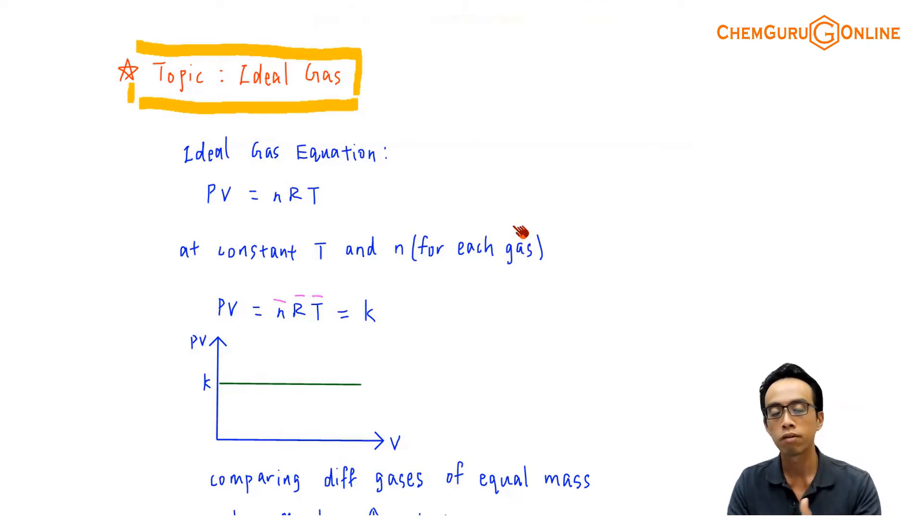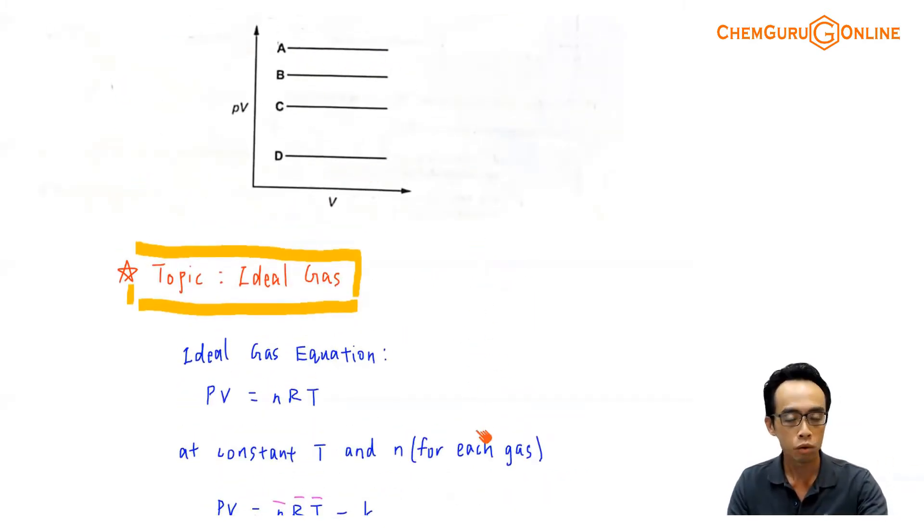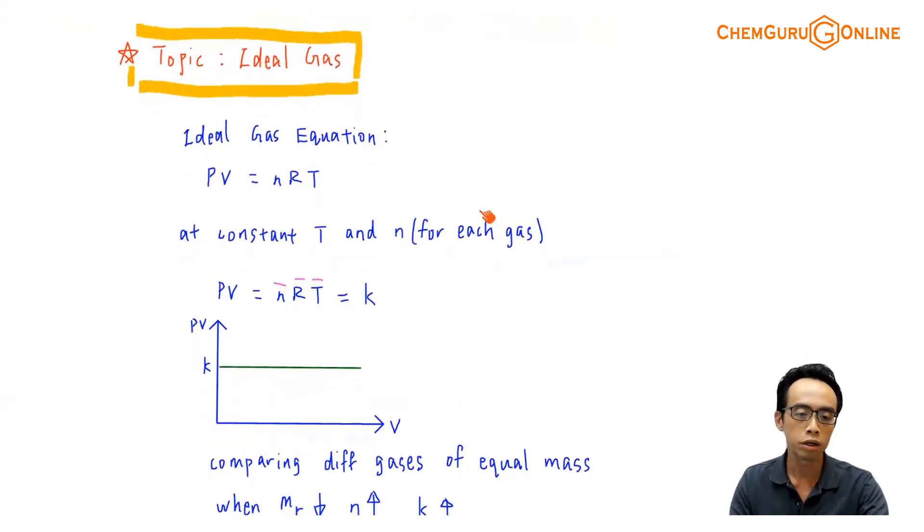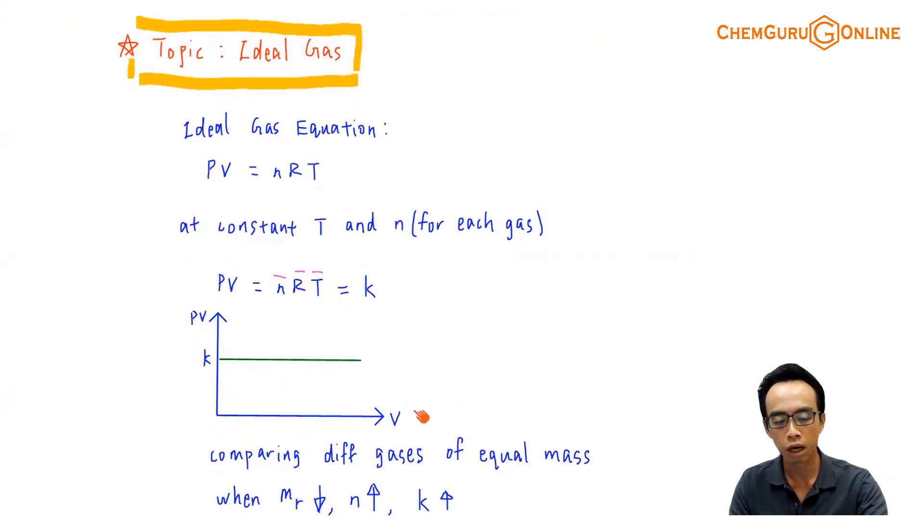Therefore, when I consider the graph of PV against V, we would expect a horizontal graph, which is of course what the question is giving. The y-intercept will be my constant term, and this constant term is actually number of moles multiplied by gas constant multiplied by temperature. We can actually determine this K, we can actually calculate it if I have all these values here. We have the temperature, we have the gas constant, and if I have the number of moles of gases, I know what is the y-intercept.